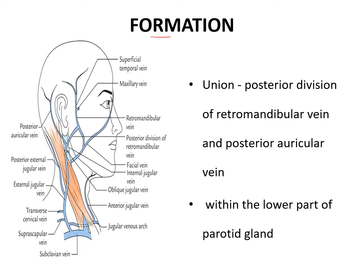Now let us see how this external jugular vein is formed. The retromandibular vein divides into an anterior division and a posterior division. The posterior division of the retromandibular vein joins with the posterior auricular vein to form the external jugular vein.